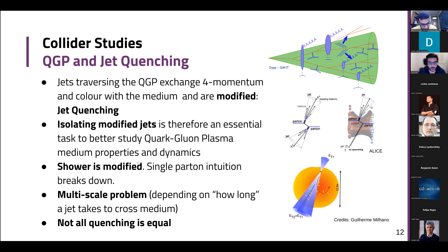The shower will be modified. Here you have an example from ALICE showing the difference between parton-parton and heavy-ion collisions. We have to go a little bit beyond our simple proton-proton intuition, because it is actually a multi-scale problem. As the quark-gluon plasma is cooling down, the jet will be interacting at different stages of the plasma's thermal history. So this is a very complicated problem, and it also means that not all jet quenching is born equally.